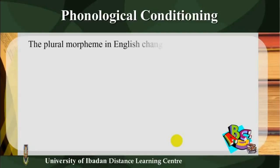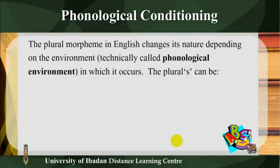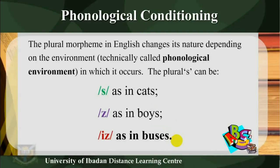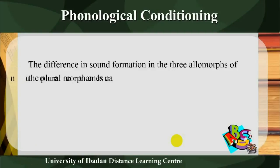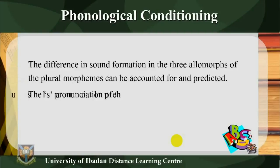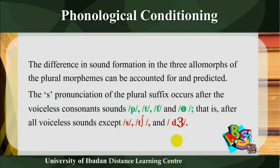Phonological conditioning: the plural morpheme in English changes its nature depending on the environment — technically called the phonological environment — in which it occurs. The plurals can be: S as in cats, Z as in boys, IZ as in buses. The difference in sound formation in the three allomorphs of the plural morpheme can be accounted for and predicted. The S pronunciation of the plural suffix occurs after voiceless consonant sounds P, T, F.